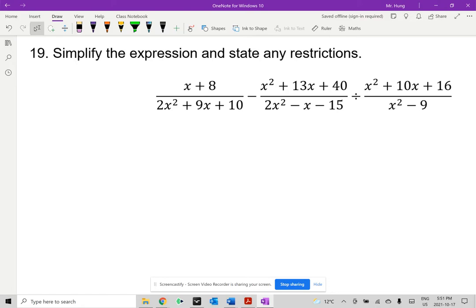x plus 8 divided by 2x squared plus 9x plus 10 minus x squared plus 13x plus 40 divided by 2x squared minus x minus 15 divided by x squared plus 10x plus 16 all over x squared minus 9.